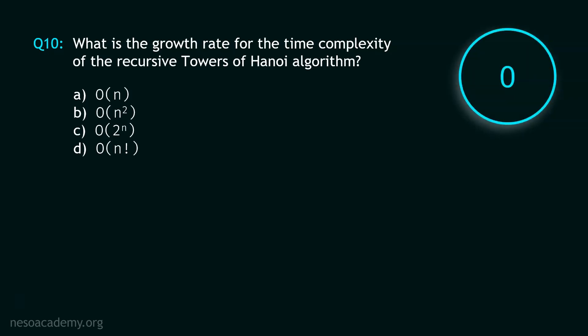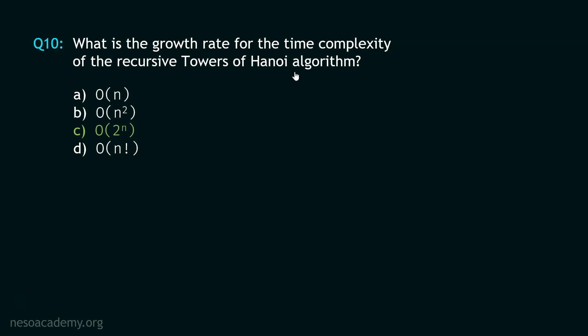Stop. The correct option is option C: Big O of 2^n. The algorithm takes an exponential amount of time — the growth rate is exponential. So this is the answer to this problem.